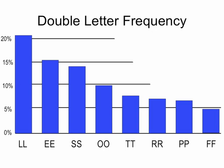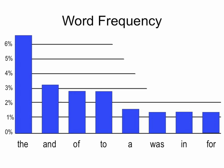You also knew that LL is the most common double letter, and that the most common word in English is THE, followed by AND. Using these clues — especially letter frequency — you've got a real crack at solving this cipher.